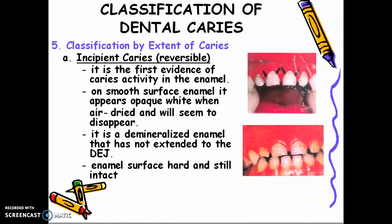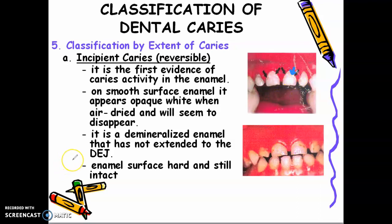Classification number 5 is classification by extent of caries. We have incipient caries, also called reversible caries or non-cavitated caries. This is the first evidence of caries activity in the enamel. You will see some white spots on the tooth. On smooth surface, it appears opaque white when air-dried. It is demineralized enamel that has not extended to the DEJ. The enamel surface is hard and still intact.